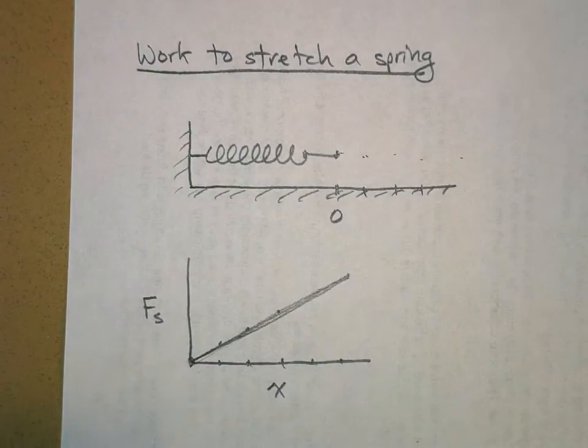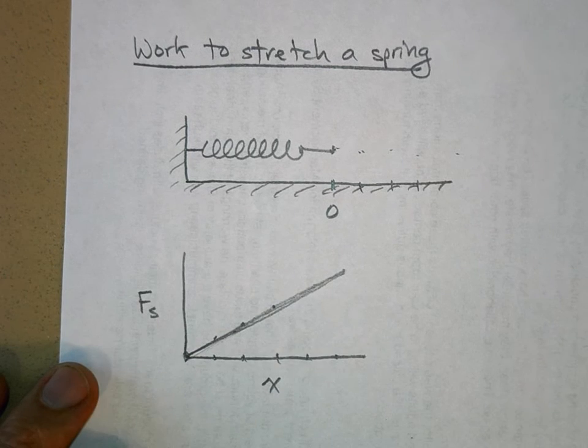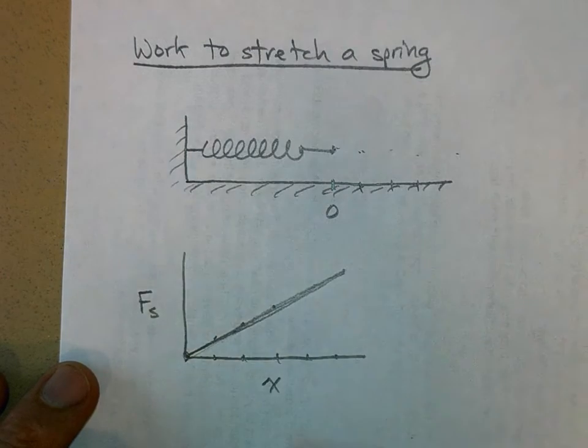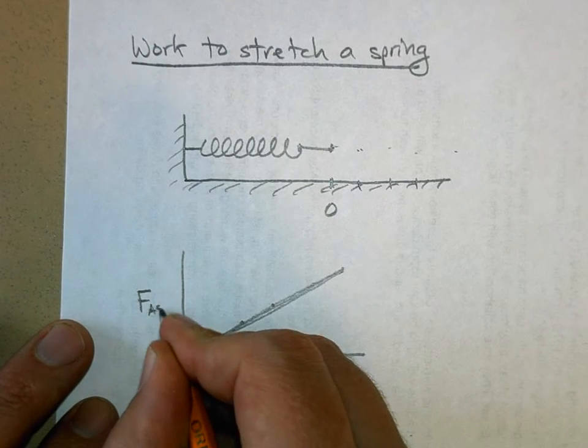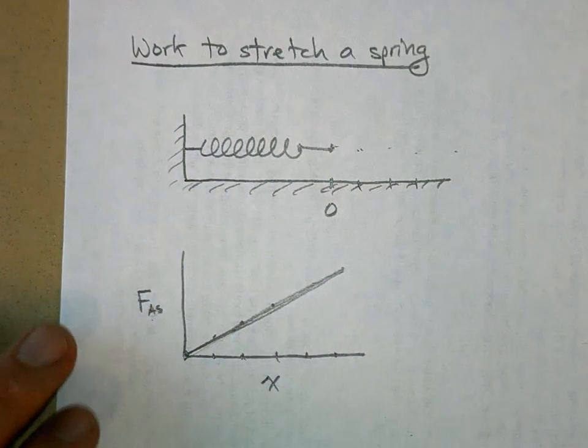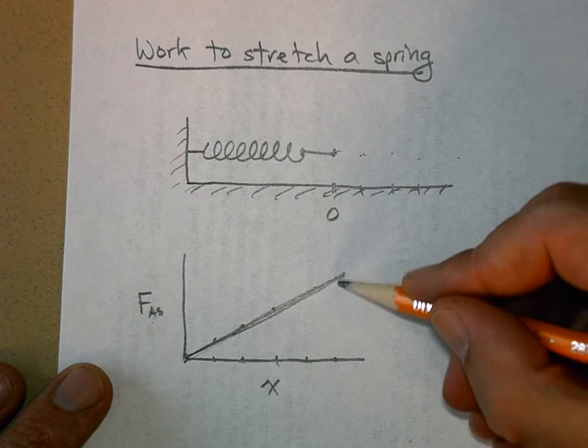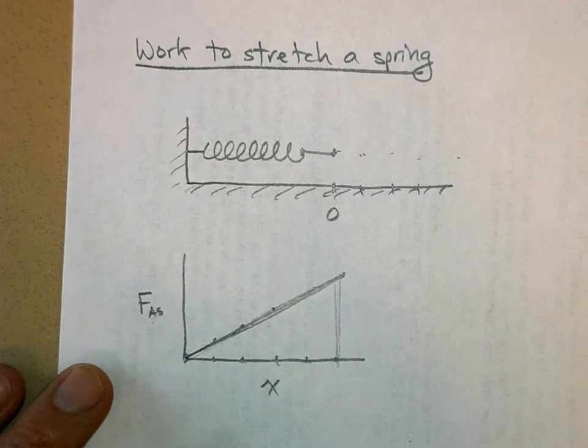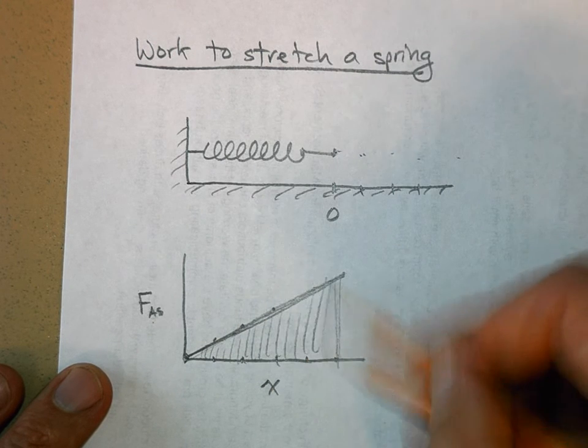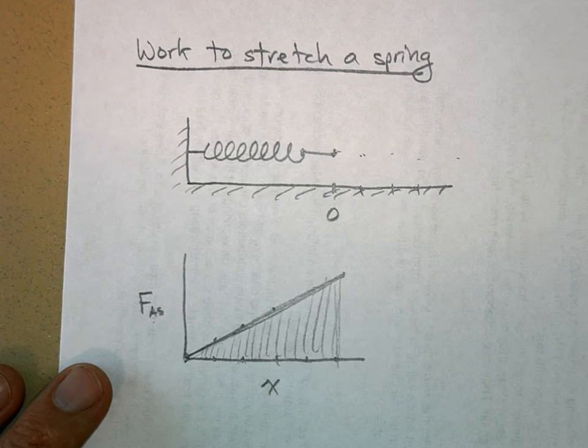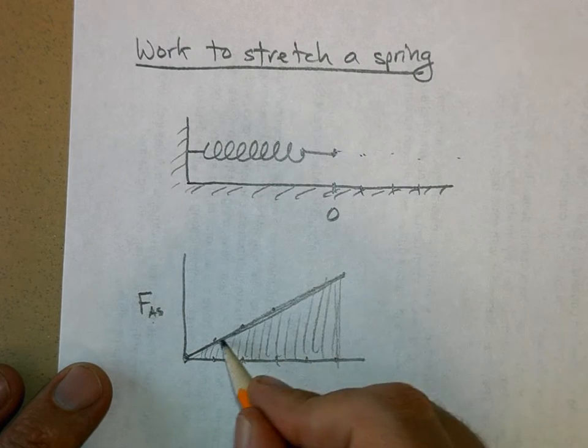I'm going to call this F sub AS, the force that I apply to the spring. You'll see why I do that in a second. But now, the area of this is the work done, and that's what I'm concerned about here. But first, let's talk about the slope - what's the slope of this line and what does it mean?